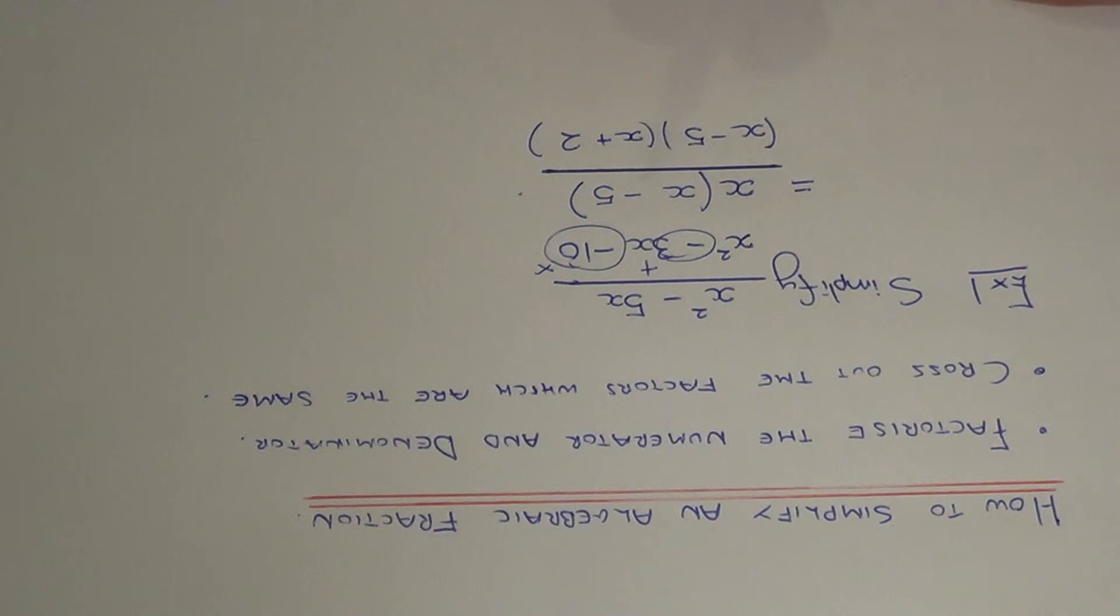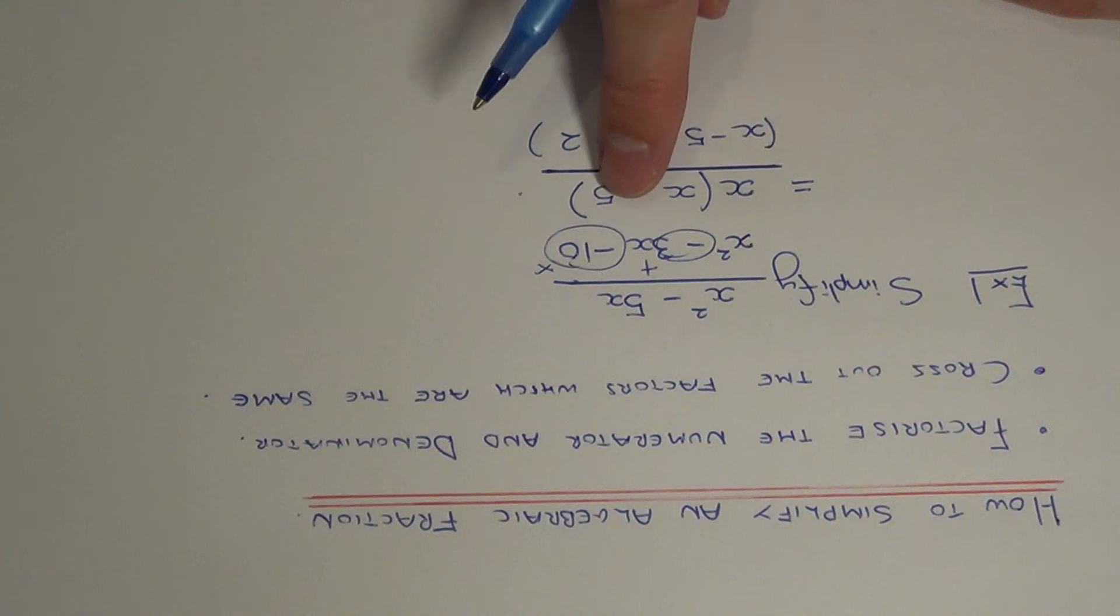So if you notice now on the numerator and denominator we have x minus 5 on the top and the bottom.